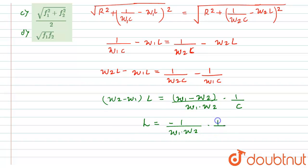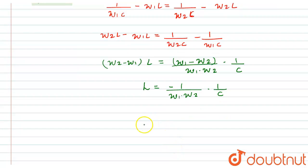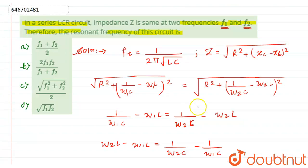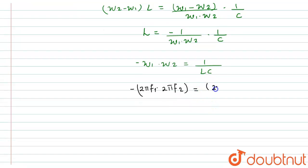From this, ω₁·ω₂ = 1/(lc). Substituting ω₁ = 2πf1 and ω₂ = 2πf2, we get (2πf1)(2πf2) = 1/(lc). Since 1/(lc) = (2πfr)², taking the square root of both sides gives 2π√(f1·f2) = 2πfr.